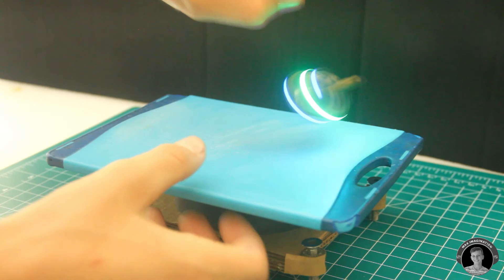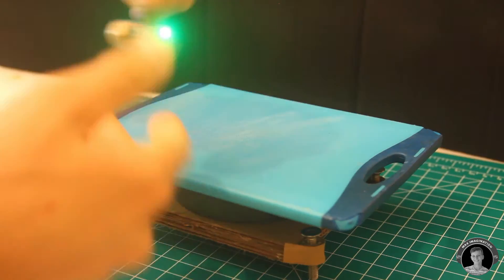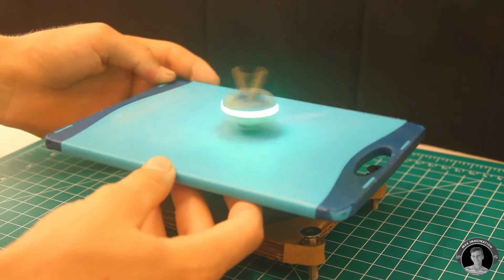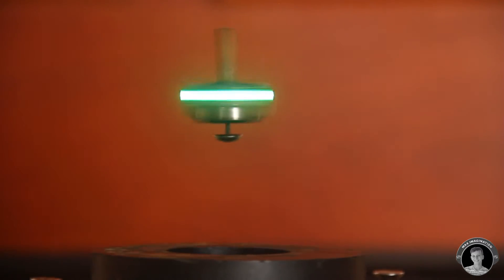When it gets spun too slowly, the levitating top can no longer counteract the torque, and it's pulled back down to the base.